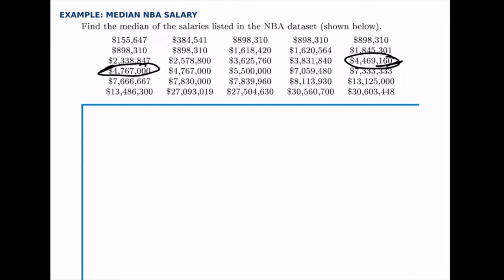Since there are two values in the middle — which happens every time we have an even number of data points — we need to find the number halfway between those two, which we do by averaging them together. The average of those two middle numbers will be the median.